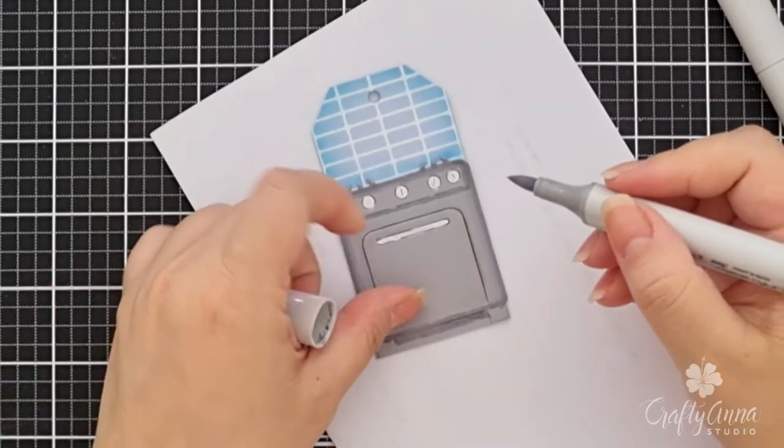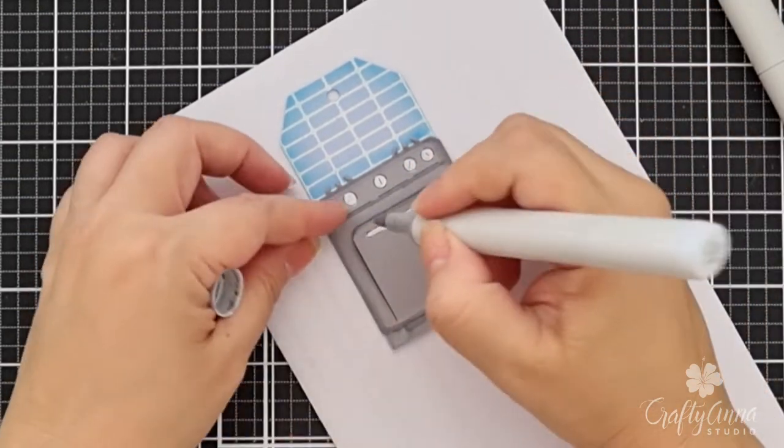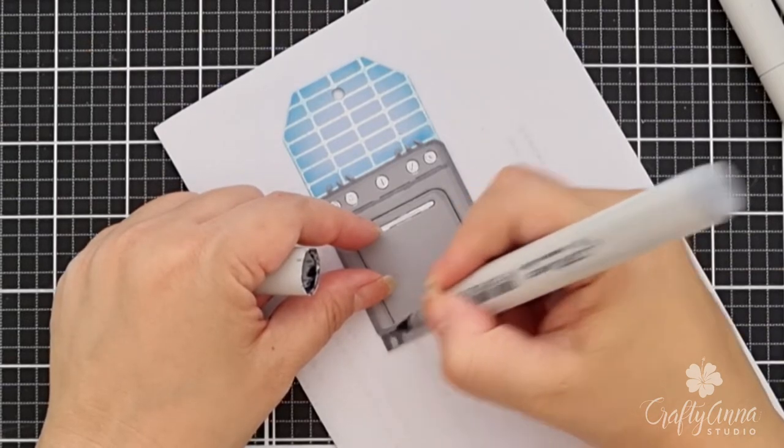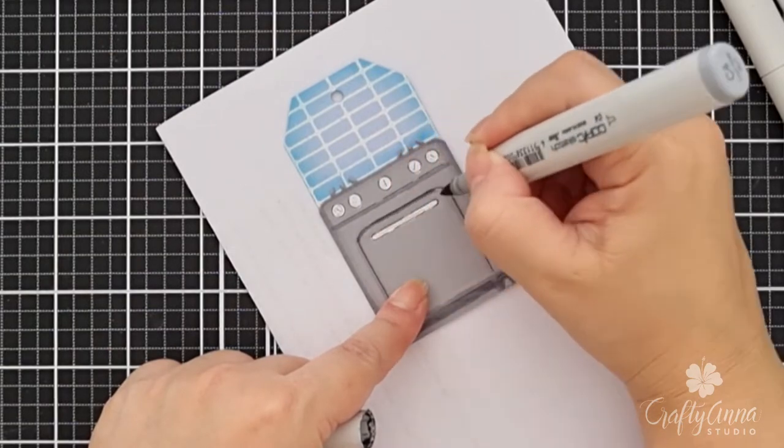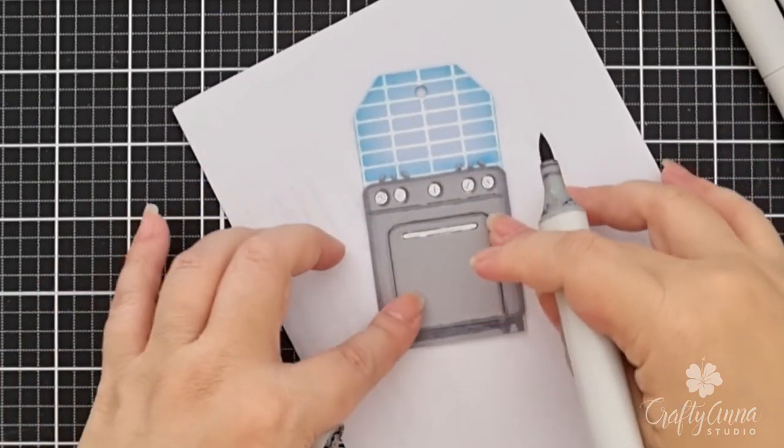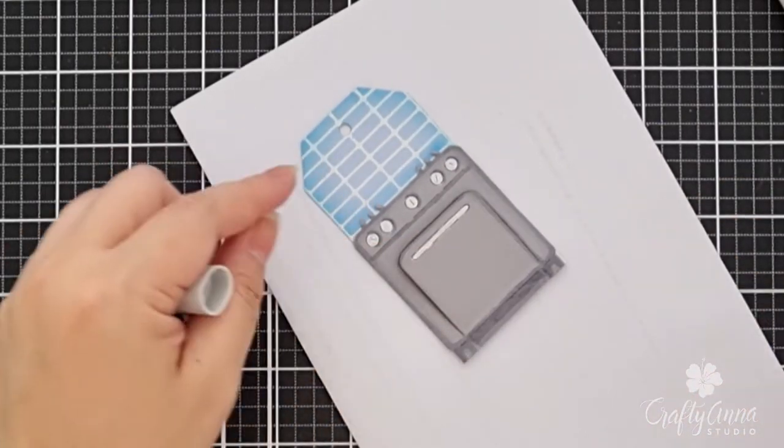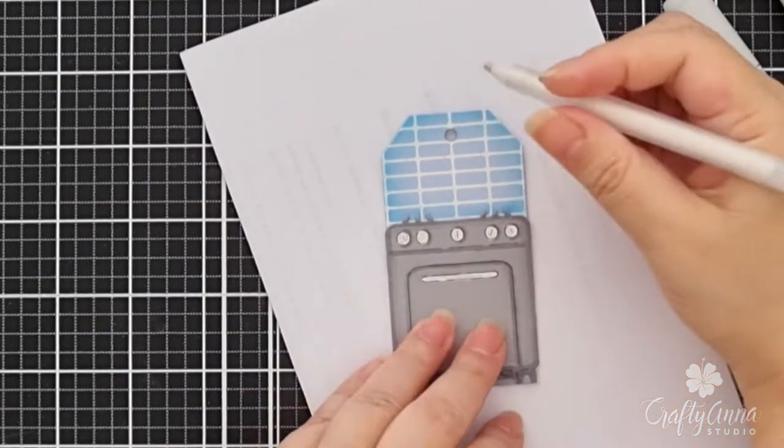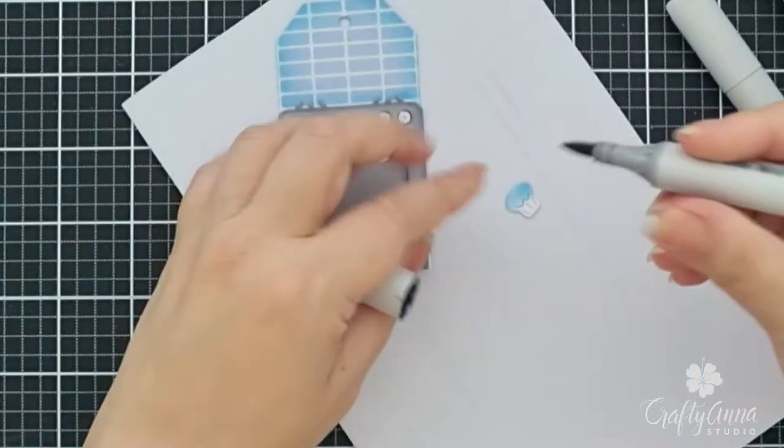Then I will soften the outline details with C1 and C0. I will do the same for the cupcake liner.